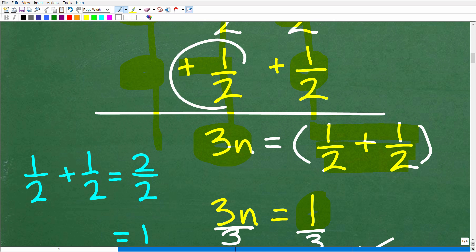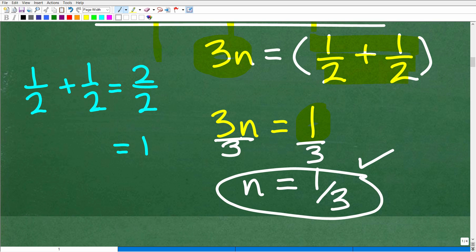The first step was to add one-half to both sides of the equation. And then right here, the second step was to divide both sides of the equation by 3 to solve for n.